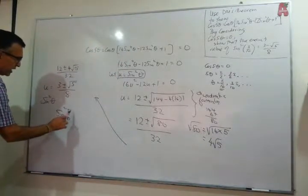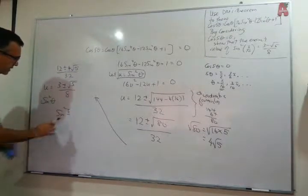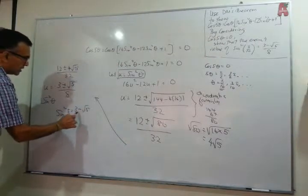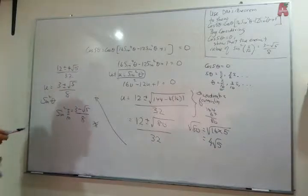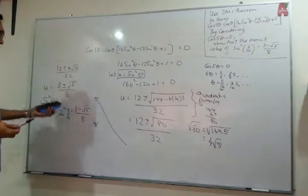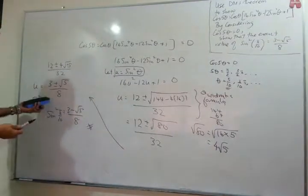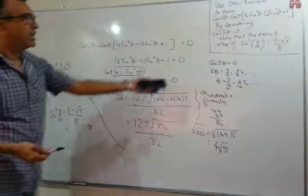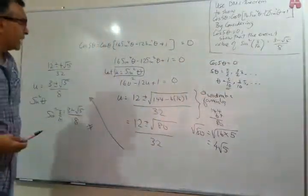It will be equals to 3 minus square root 5 over 8. And we are done. Don't worry about the plus, because that's for values that are bigger than π over 10. So the smallest value will be 3 minus square root 5 over 8, like the question asked you to show.